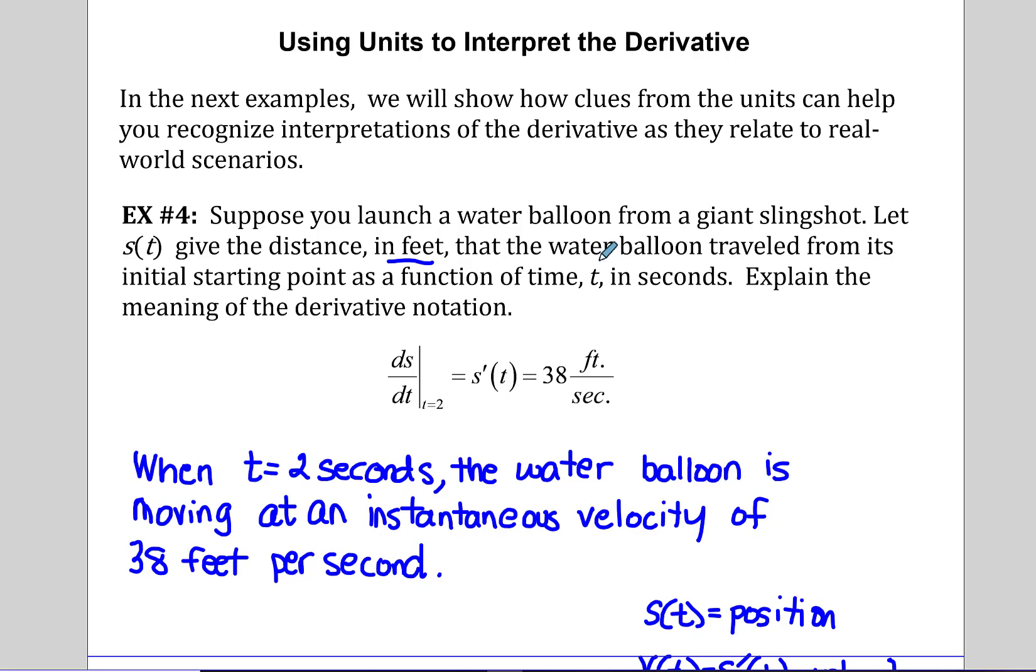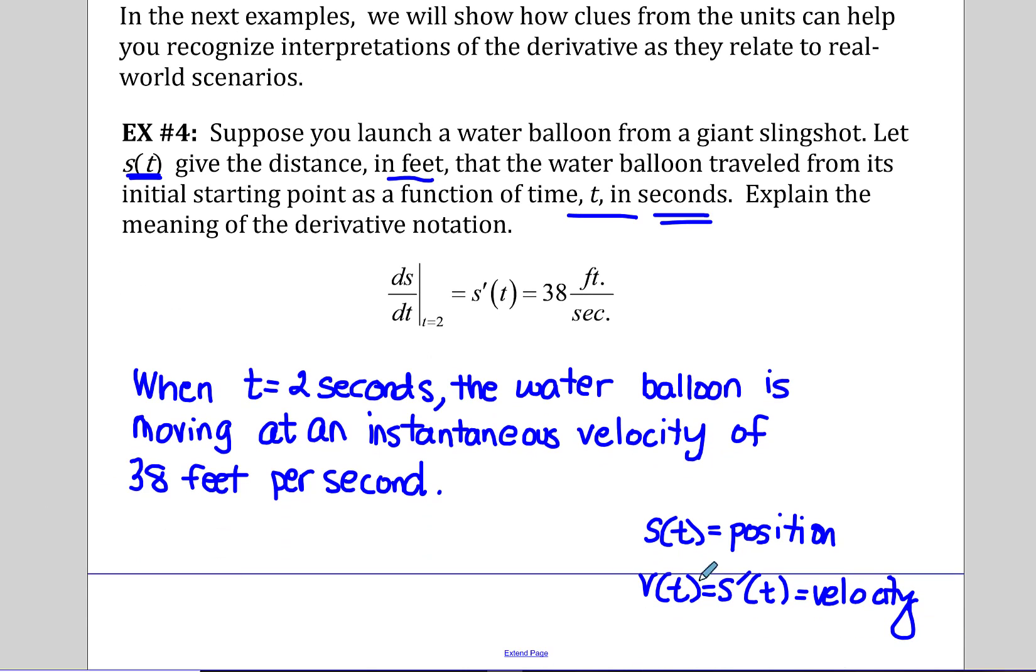Suppose you launch a water balloon from a giant slingshot and you let s(t) give the distance. And the distance is in feet that the water balloon traveled from its initial starting point as a function of time, and time is in seconds. So distance is in feet and time is in seconds. We want to explain the meaning of the derivative notation ds/dt at t equals 2 is s prime of t, and that's 38 feet per second. So this is the rate of change, and when t is two seconds, the water balloon is moving at an instantaneous velocity of 38 feet per second. So let's just remember: if s(t) is position and we take the derivative of position, the first derivative is velocity.